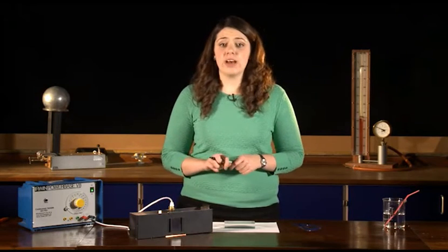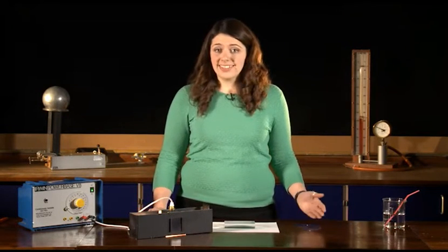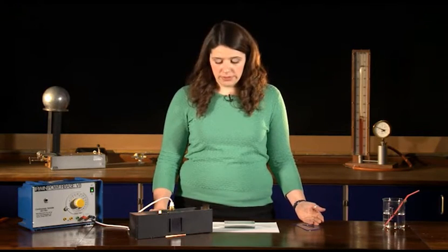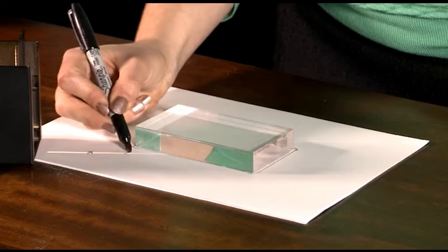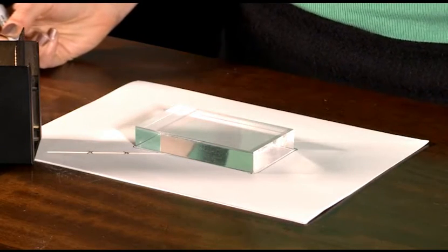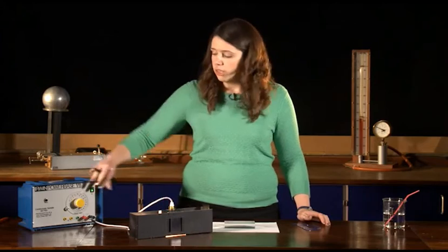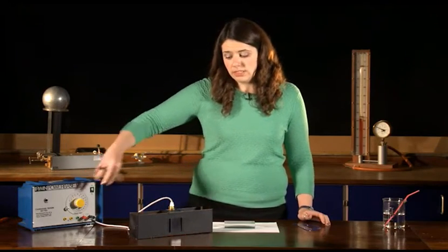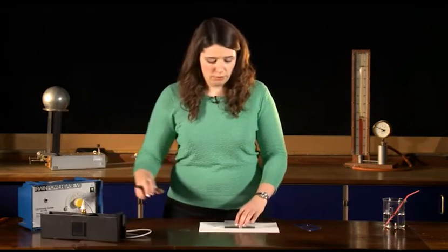Now I need to trace where the rays of light are going, so when I take the ray box away, I can still work out what happened. So to do that, I'm going to put two crosses where I can see the ray of light passing through before the block and two crosses where I can see the ray of light passing after the block. I'm finished with that now, so I can turn it off, put it away and start to draw my ray diagram properly.